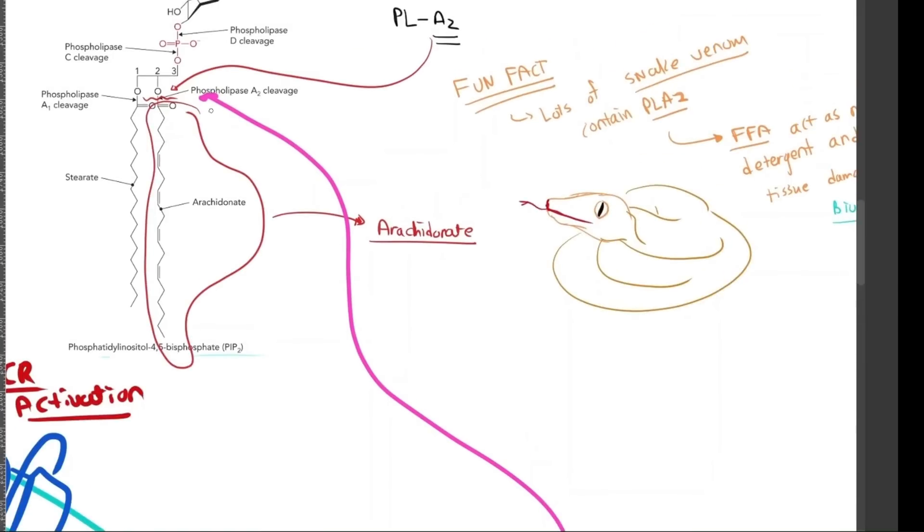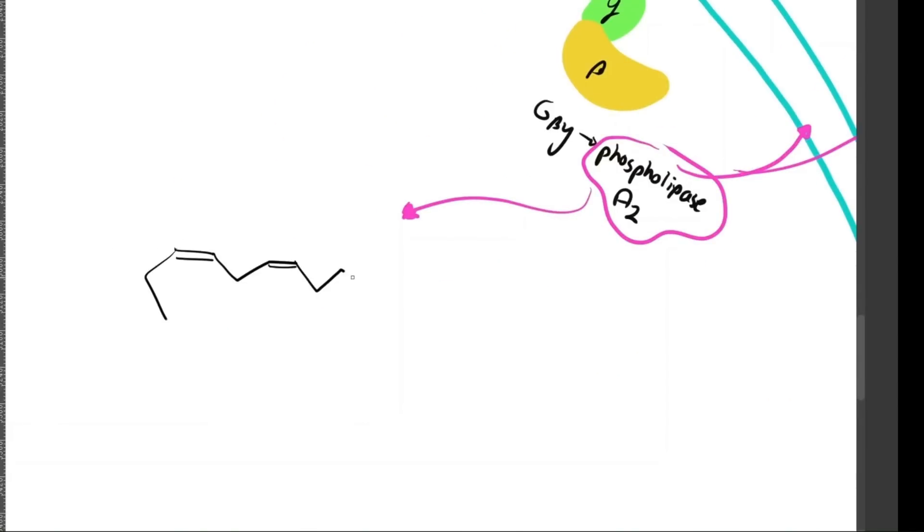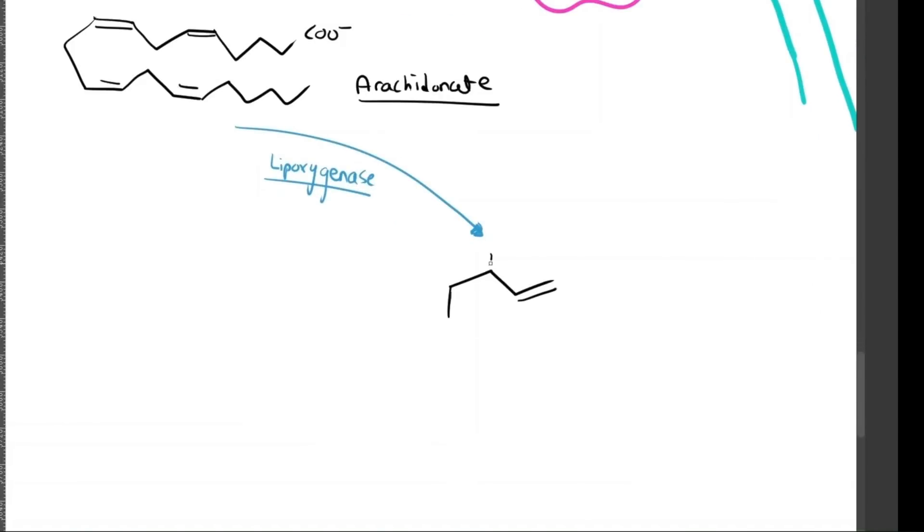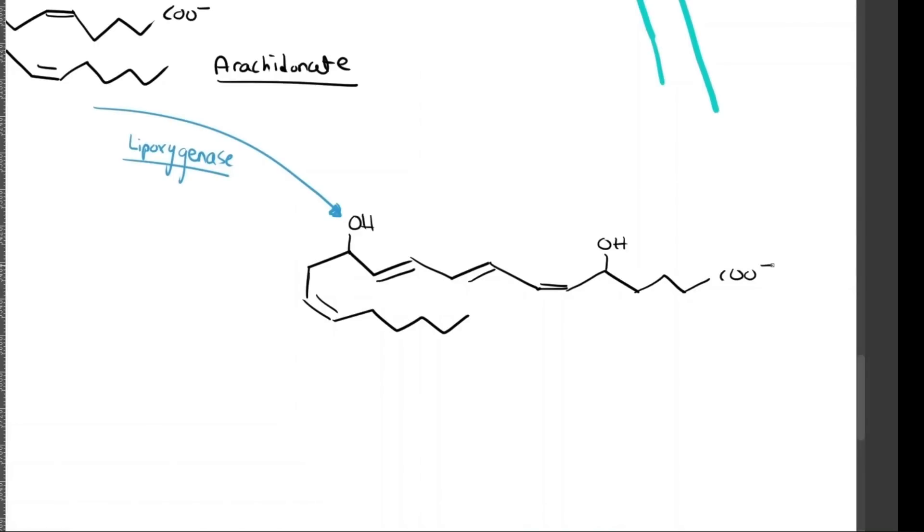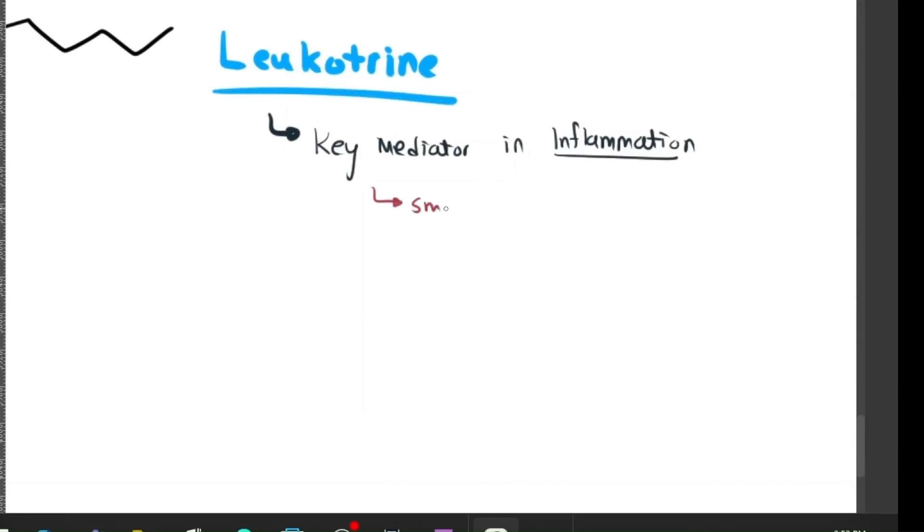Phospholipase A2 cleaves phospholipids at that SN2 position, releasing arachidonic acid. Arachidonic acid basically serves as this key precursor in the inflammatory cascade. This is where it gets interesting. We're able to branch off into two different pathways. First here, via lipoxygenase, we are going to branch into the leukotriene pathway. Leukotrienes are essentially these very powerful signaling molecules that play a crucial role in inflammation by promoting bronchoconstriction, increased vascular permeability, and immune cell recruitment. These leukotrienes are key mediators in inflammation.